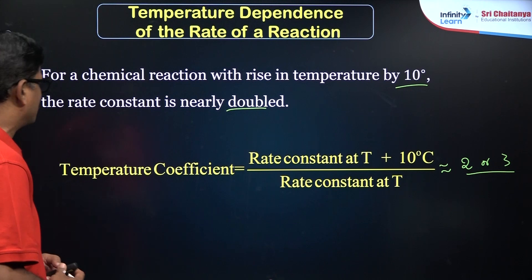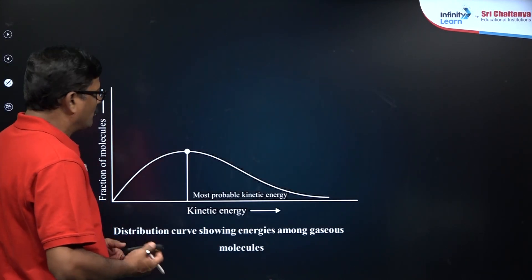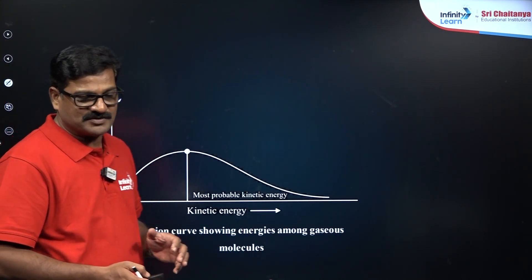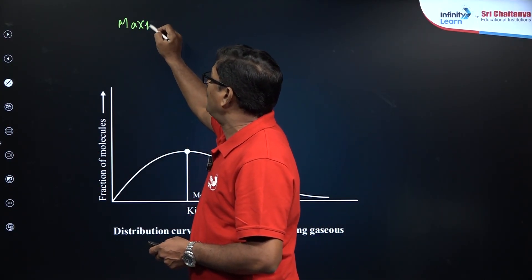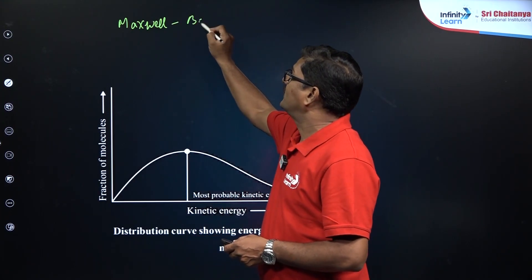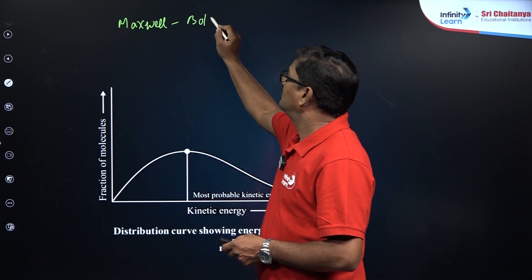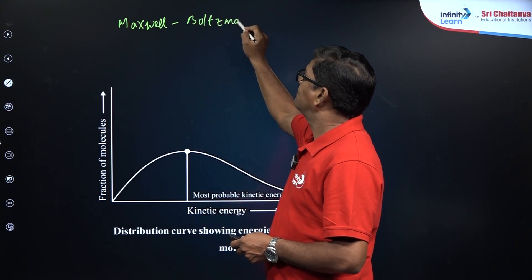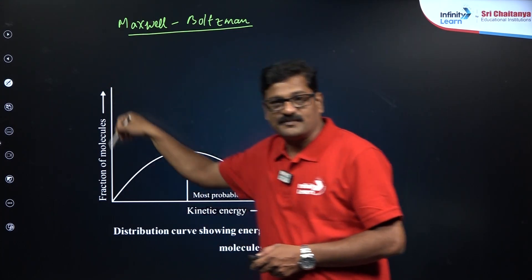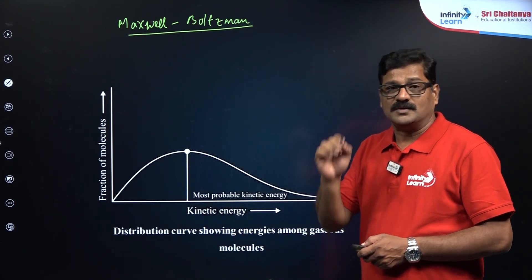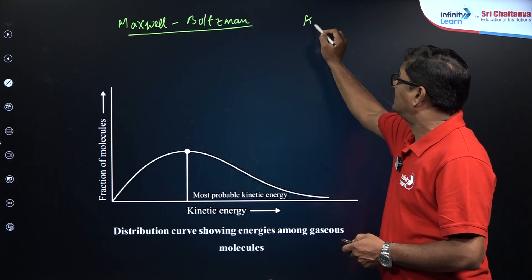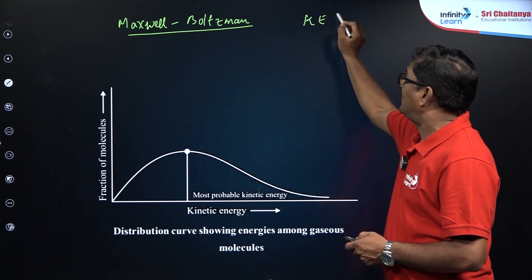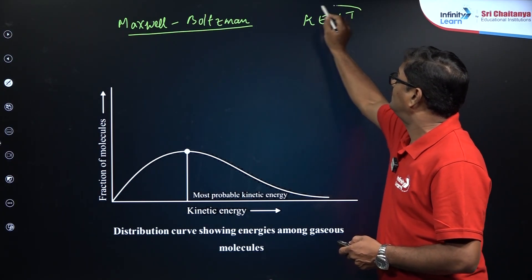Before going into the Arrhenius equation, let us discuss the Maxwell-Boltzmann molecular distribution curves. From the kinetic theory of gases, the kinetic energy of gases is directly proportional to the absolute temperature.